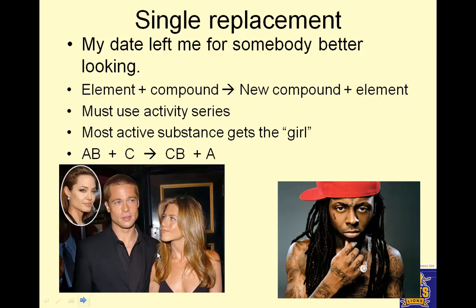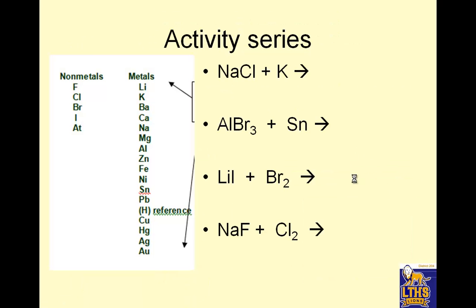Single replacement. My date left me for somebody better looking. So I have an element plus a compound yields new compound plus element. You must use the activity series, which you were given in class. This is the activity series. So most active substance gets the girl or the date or whatever it is. For example, Brad Pitt and Jennifer Aniston used to be a couple. But then what happened? Angelina Jolie came along. Angelina Jolie is more active than Jennifer Aniston. So Jennifer Aniston got dumped, and there's Angelina Jolie and Brad Pitt, and there are 8,000 children from 35 different continents. And what someone told me before, which I found very creepy, is the most attractive man in the world is Lil Wayne. So that means Lil Wayne is going to get anybody that he wants. This says Lil Wayne. So Lil Wayne is on top, so Lil Wayne can replace anybody else.